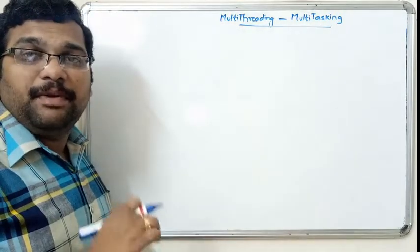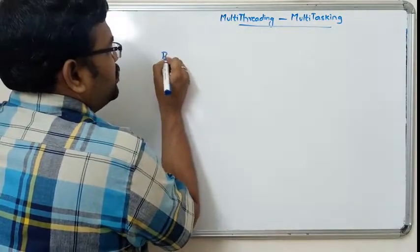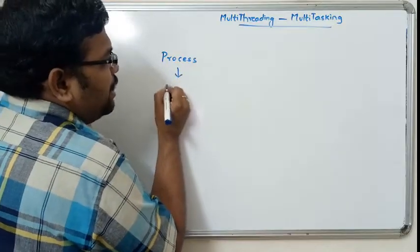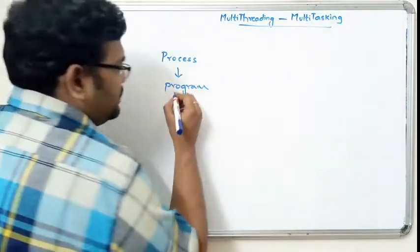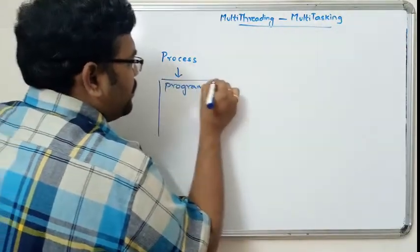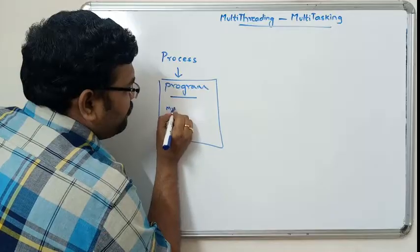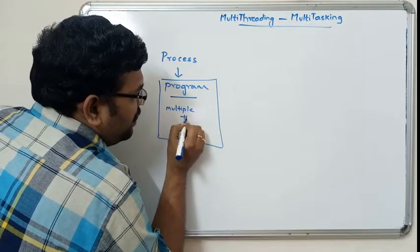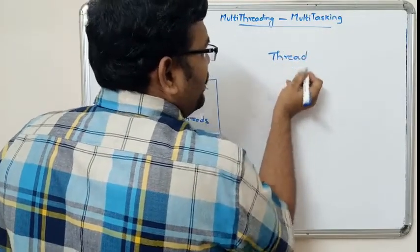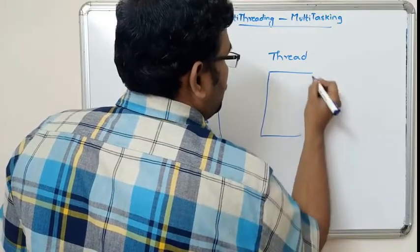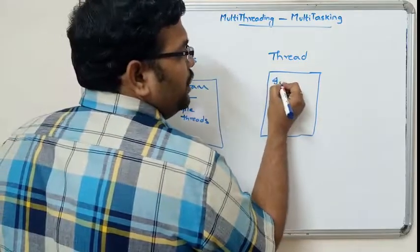First of all, let us see what is meant by thread and what is meant by process. A process is a program with multiple threads, whereas a thread is an individual unit of a program.